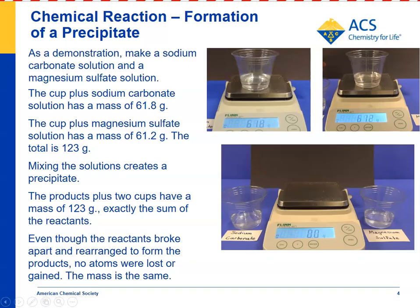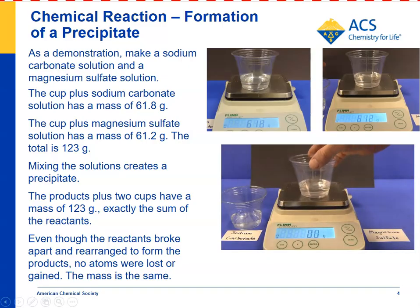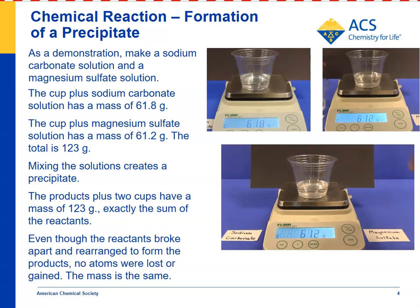Finally, you can do a demonstration of a chemical change to test whether the mass of the reactants is the same as the mass of the products. On the left, we have sodium carbonate dissolved in water, and on the right, there's magnesium sulfate dissolved in water. The sodium carbonate is 61.8 grams to start, including the cup, and the magnesium sulfate is 61.2 grams, including the cup. You put one of them on the scale — in this case, it's 61.2 grams — and now add the sodium carbonate to the magnesium sulfate, and it will form a precipitate.